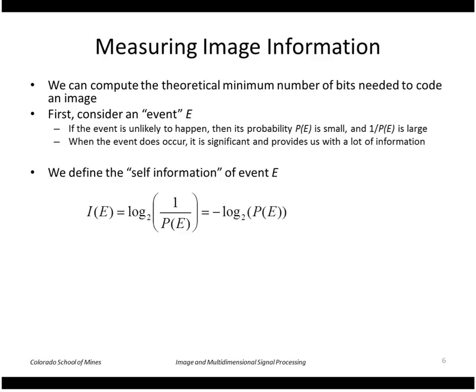We can define the self-information of an event e as the log of 1 over the probability, log base 2 that is, so that when this is a very large number, we get a lot of bits essentially from this. The log of 1 over a quantity is the same as negative log of the quantity, so we have negative log base 2 of the probability. This is how much information is attached to the event e.